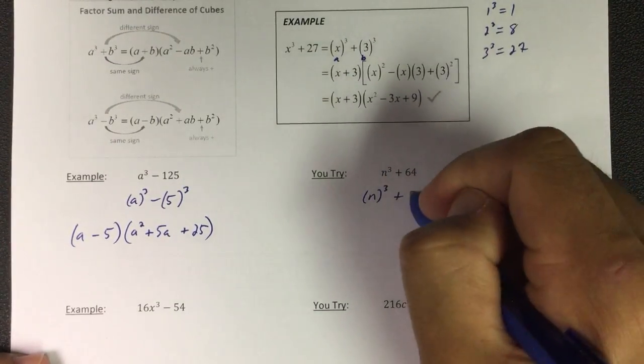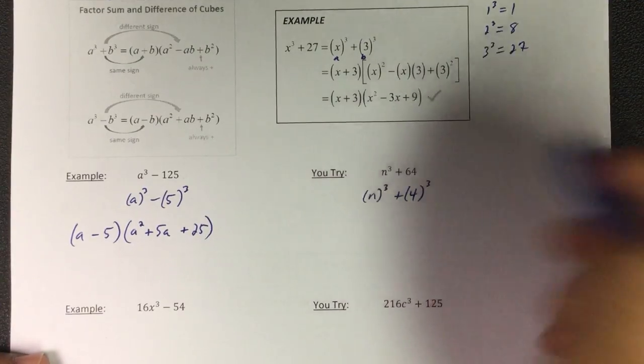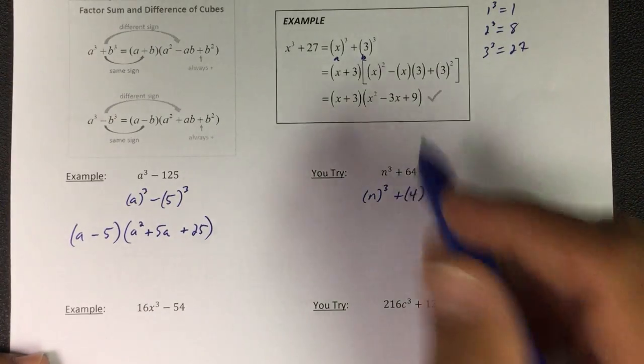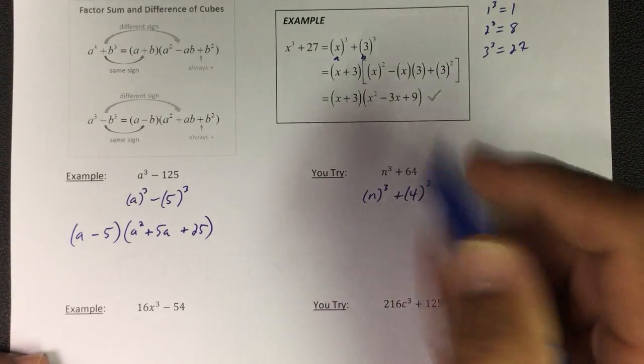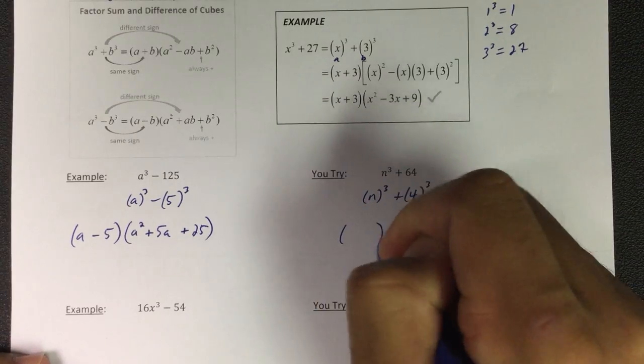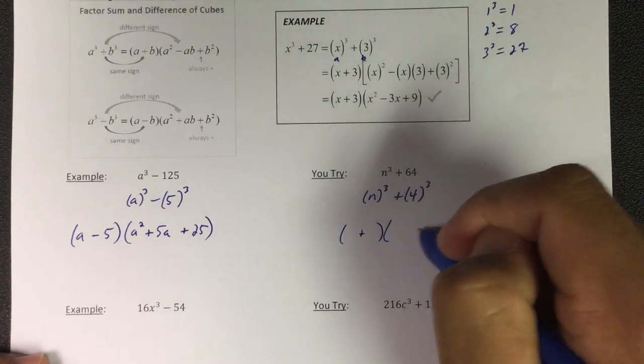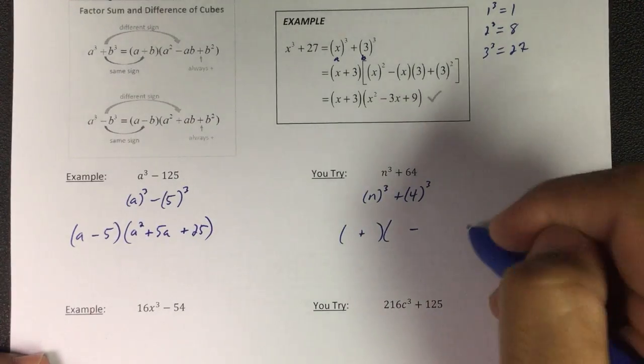But I know it's plus first, so my binomial is gonna have a plus in it. The first one is opposite, and then always plus. So n, 4.